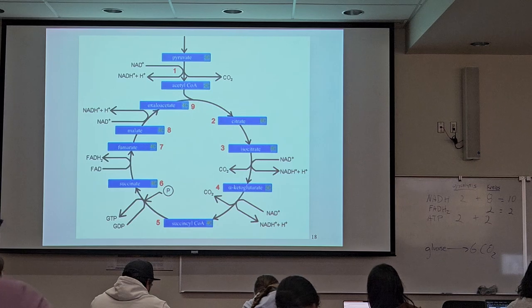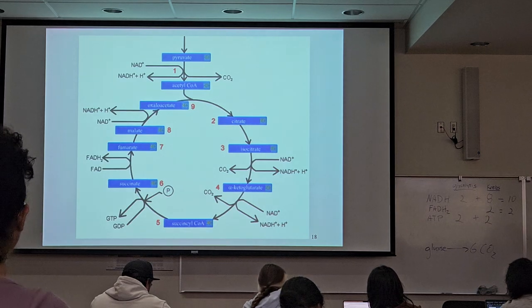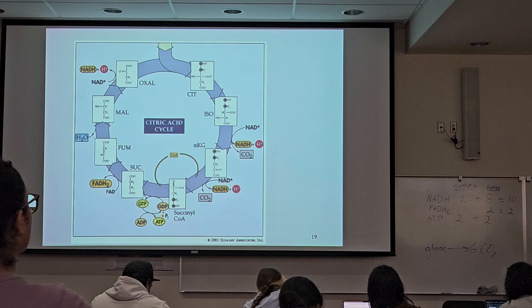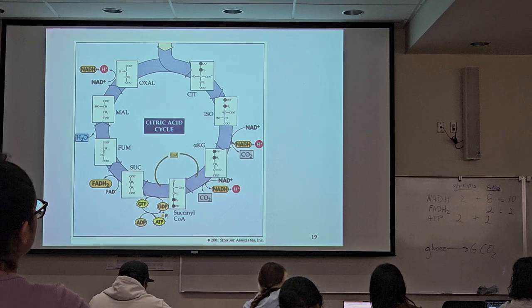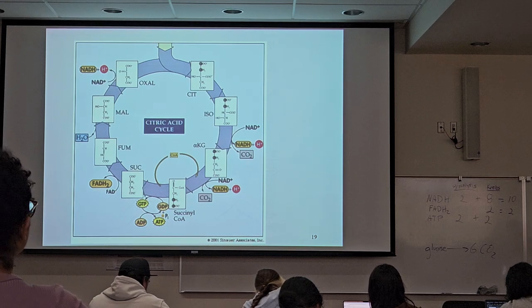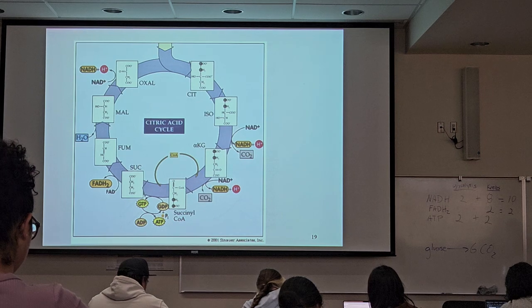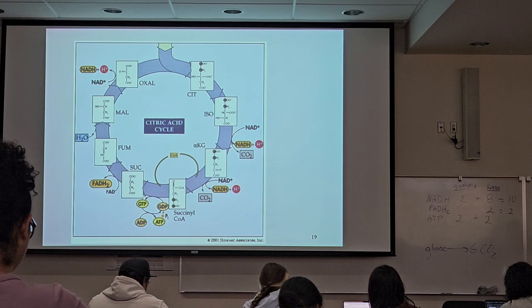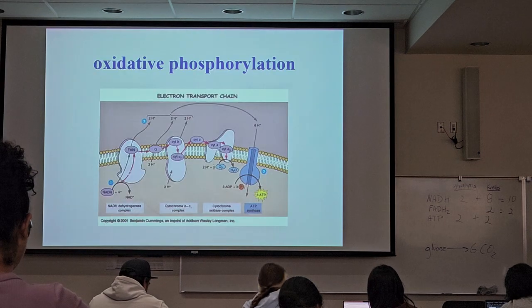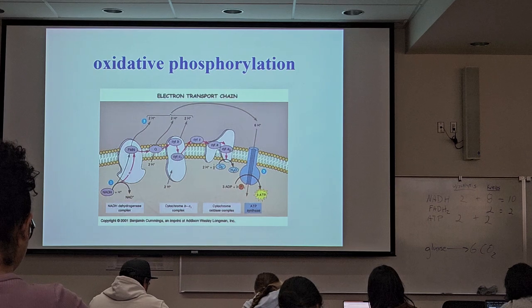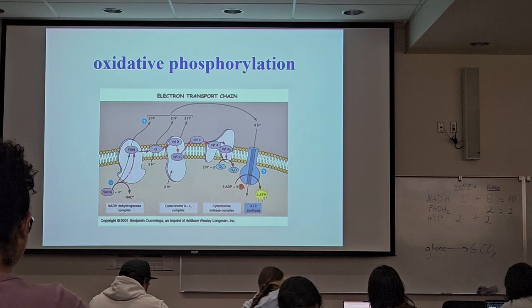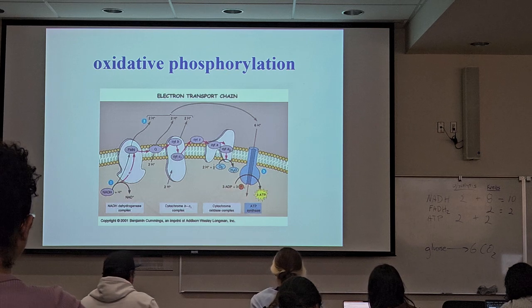Now let's see what these electron carriers do at the electron transport chain. This is just another diagram of the same thing we looked at, but it has a little more detail as far as the structure of the molecules and so forth. But it's the same exact thing. Now this electron transport chain is going to be involved in that oxidative phosphorylation that we mentioned last time.